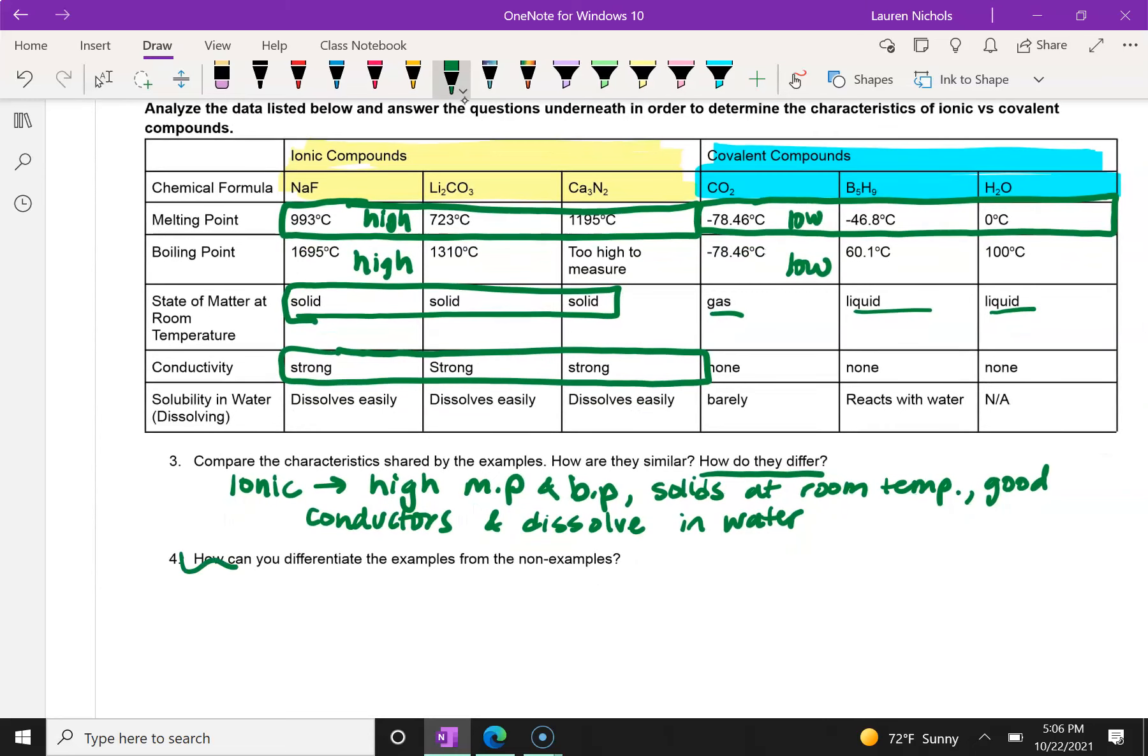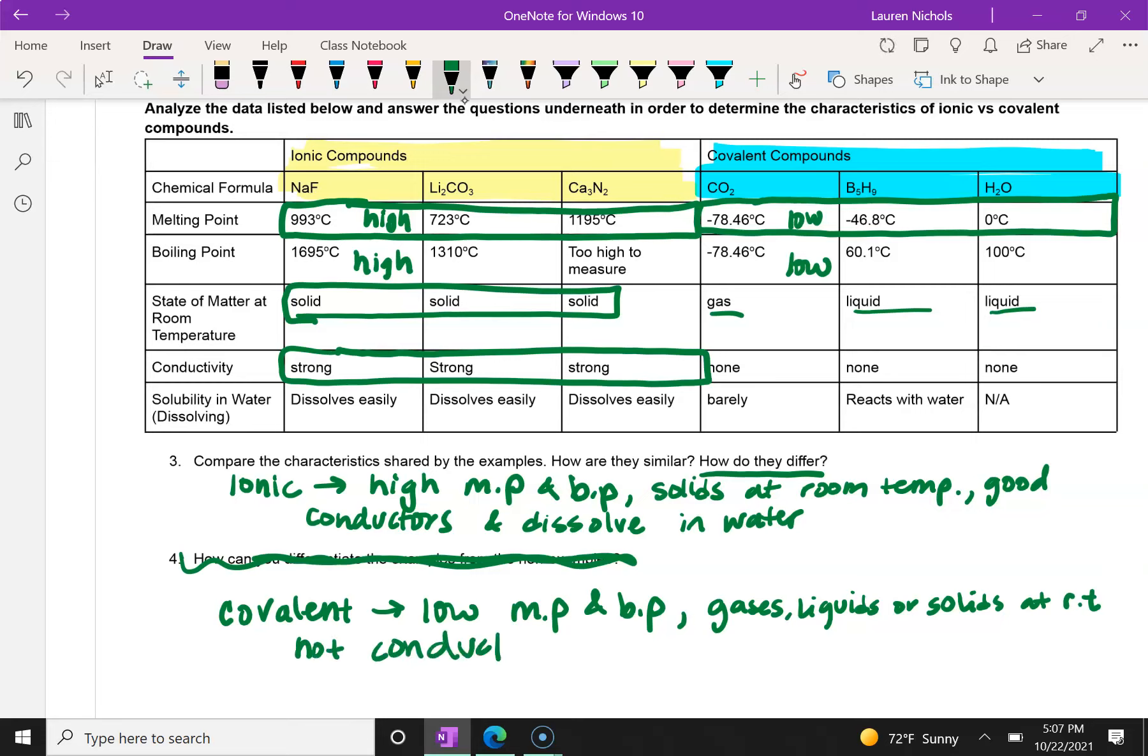So how can you differentiate? Well, that's pretty much what we were just working on. So let's kind of summarize. Covalent compounds are the opposite. They have low melting point and boiling point. They can be anywhere from gases, liquids, or some of them are solids at room temperature, and they're not conductive, and they don't dissolve easily.